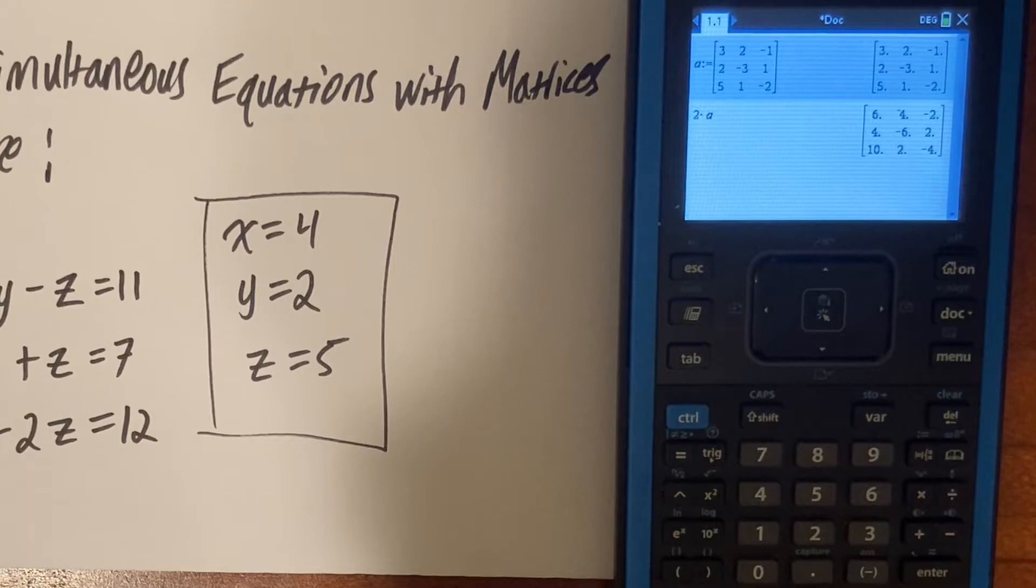Additionally, not all equations intersect. You cannot always find the solution to a simultaneous equation. A quick way of knowing if your simultaneous equation will have a solution is to just type in DET, and then your matrix. We can just type in A, as we have already stored our matrix.